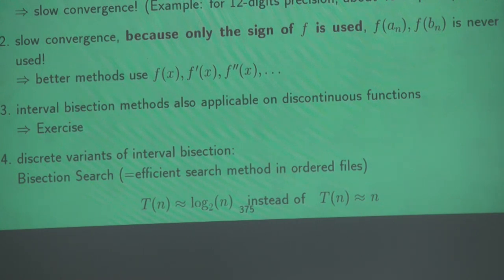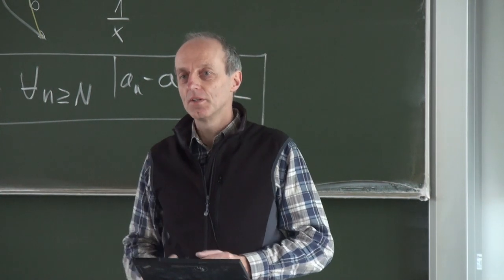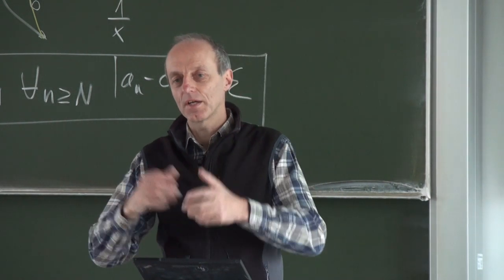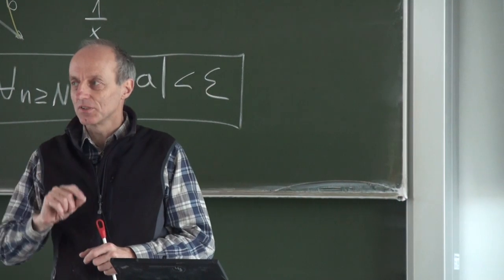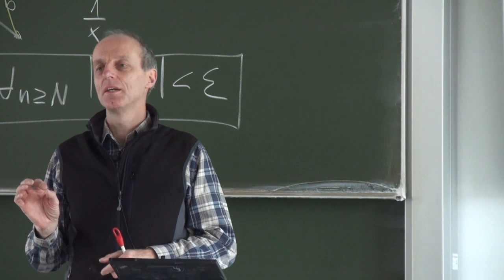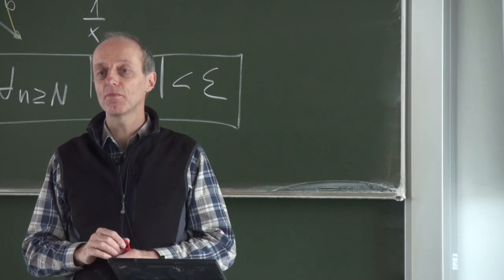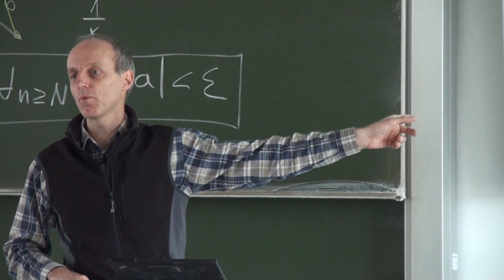Bisection search is what you do when you look up a phone number in a phone dictionary. If you look for Hooper, you open it anywhere, see the M, and know it's in the left half. Then you open the middle and see F, so it's in the right half — and so on. In the discrete world of computer science, bisection search is the best search algorithm for arbitrary sorted files. But here in numerical methods, it's among the worst algorithms.